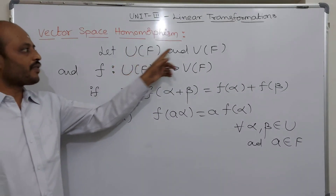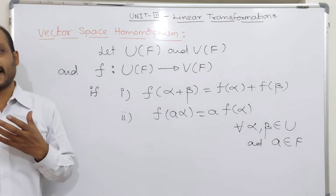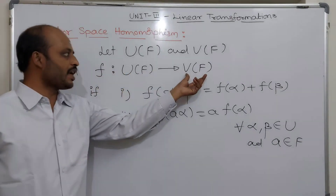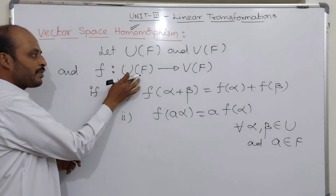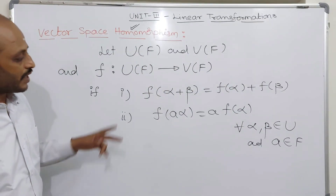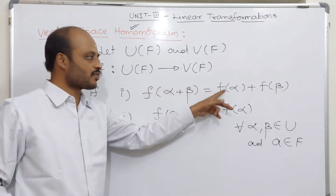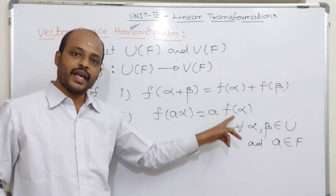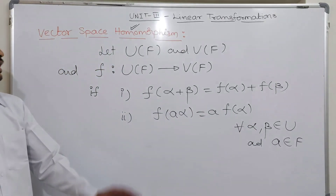To repeat the definition: U(F) and V(F) are any two vector spaces defined over the same field F. F is a function from U(F) into V(F). This function F is called a homomorphism if it satisfies: F(α + β) = F(α) + F(β), and F(aα) = a·F(α), for all α, β belonging to U and a belonging to F.